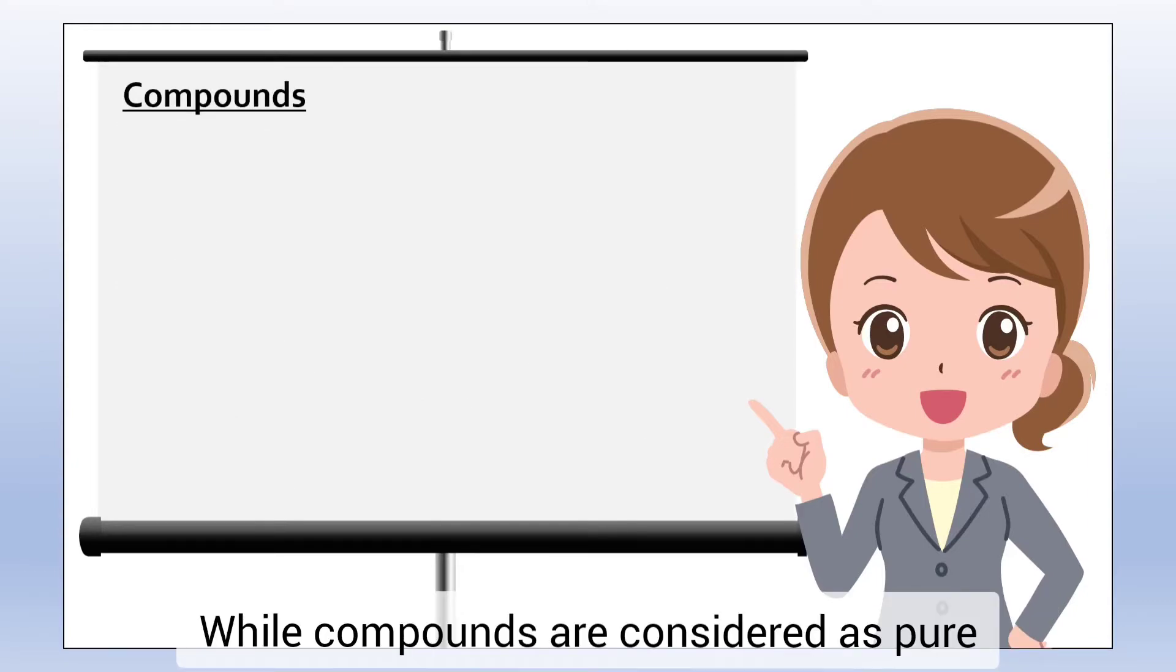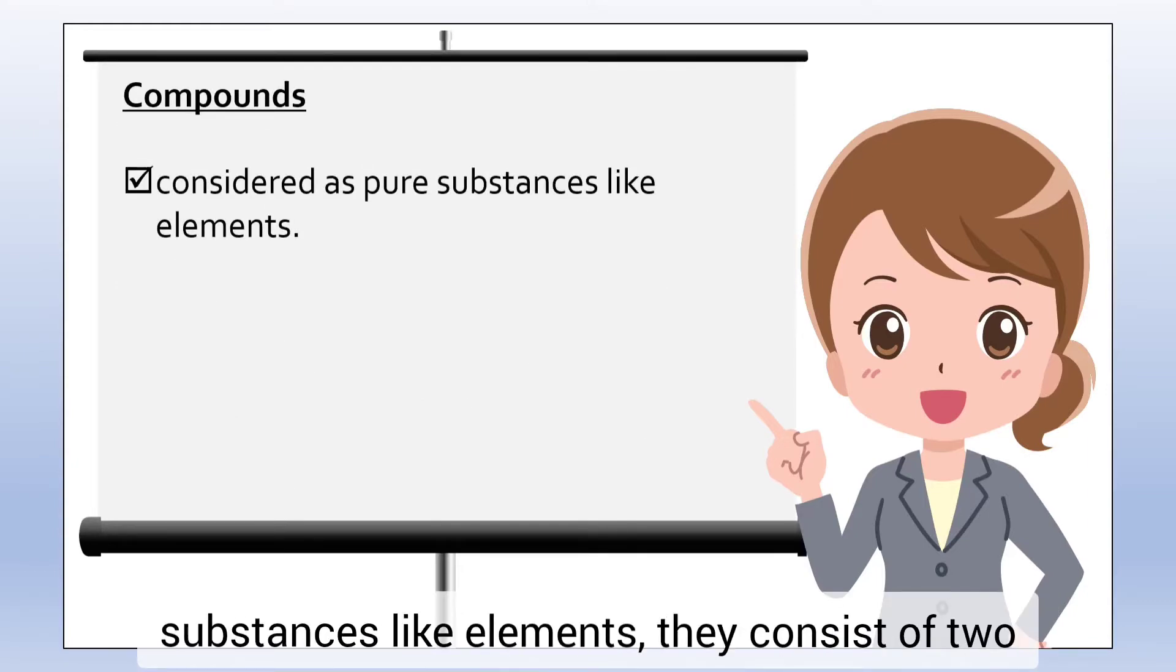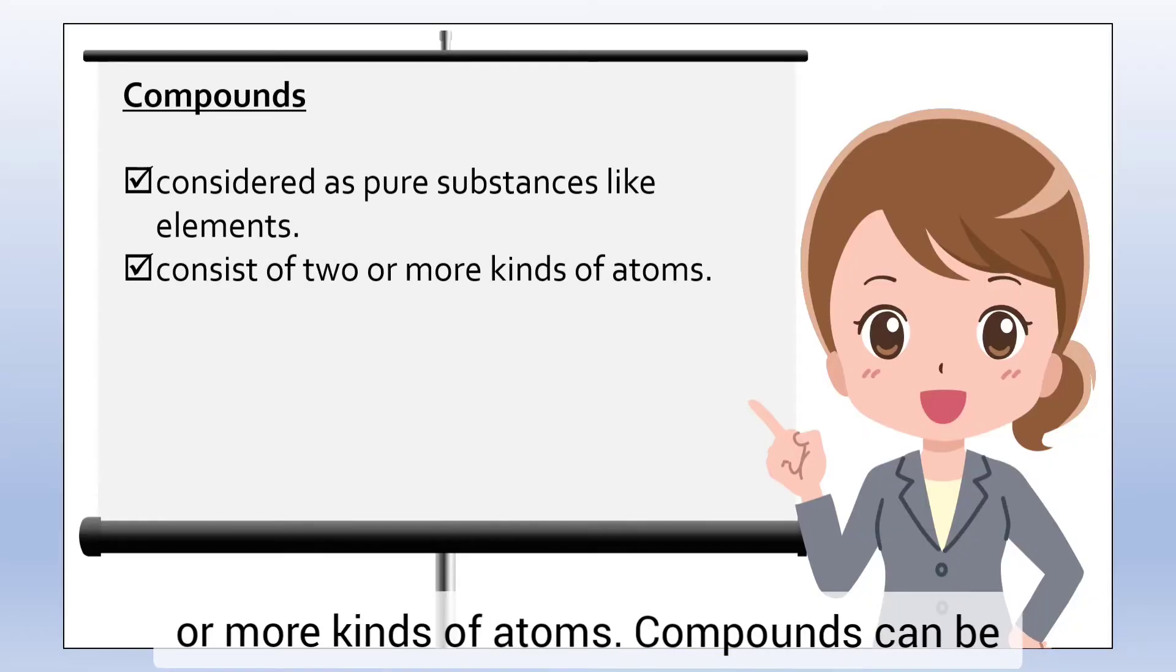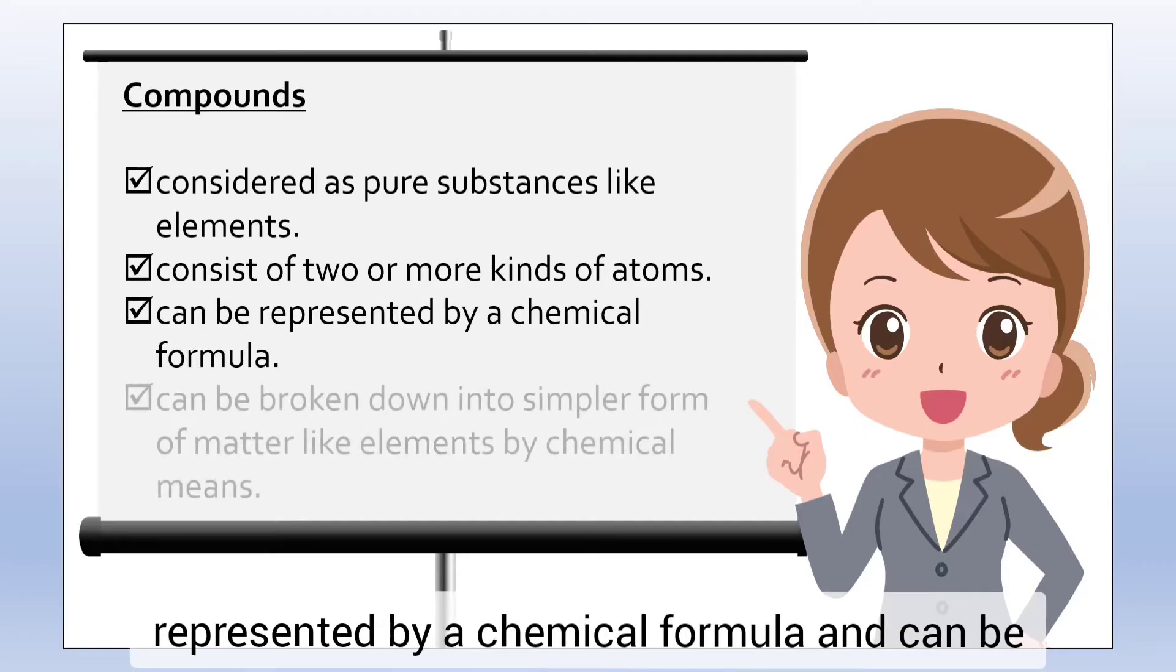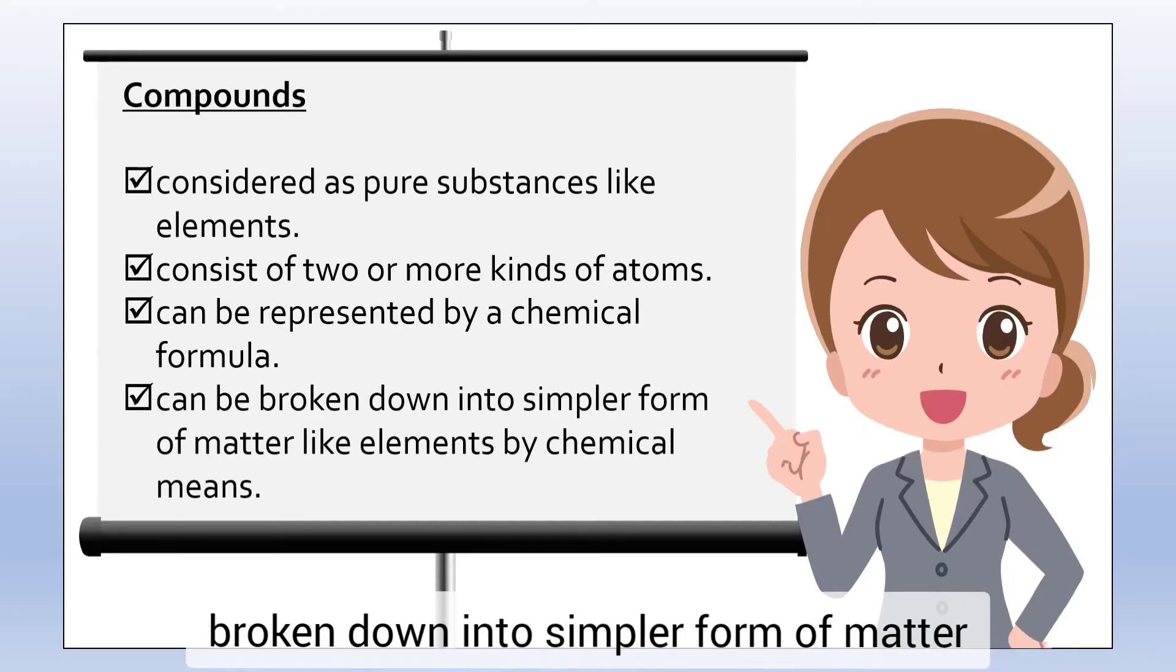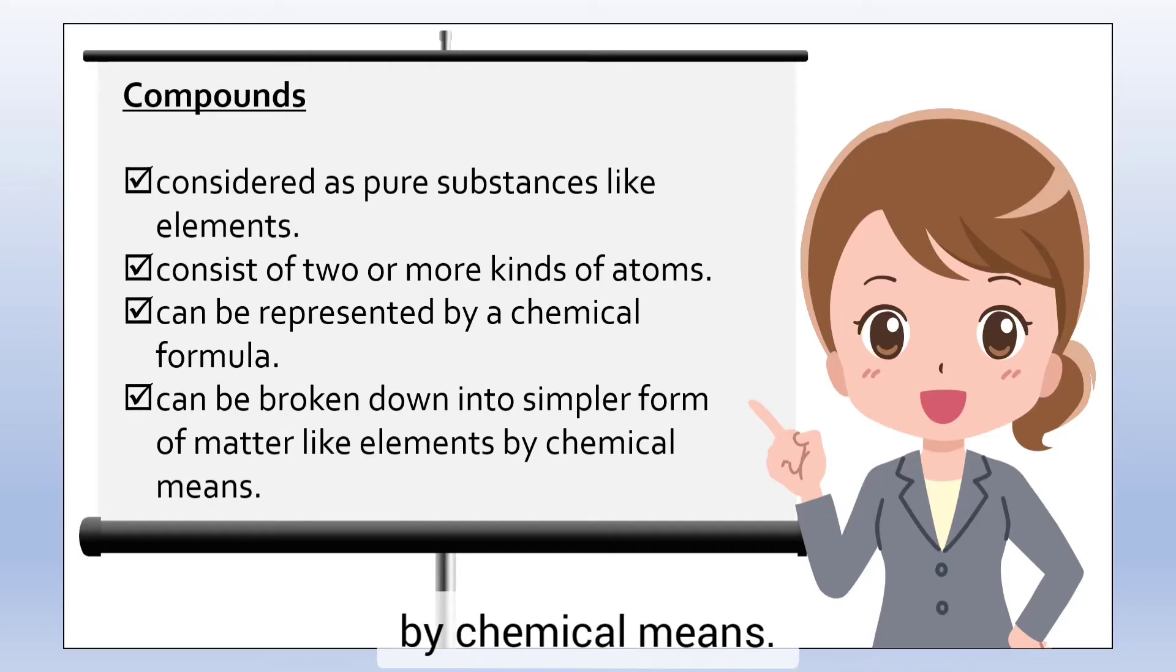While Compounds are considered as pure Substances like Elements, they consist of two or more kinds of atoms. Compounds can be represented by a chemical formula and can be broken down into simpler form of matter by chemical means.